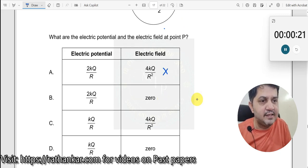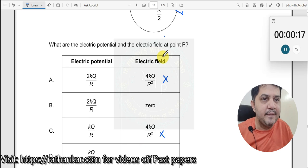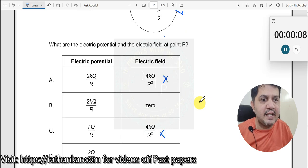this is incorrect and this is also incorrect. What is the electric potential and electric field at point P? The point is inside the surface of the sphere. Therefore, the electric field is zero. What about the electric potential?